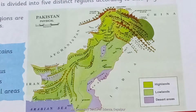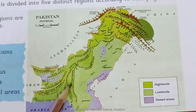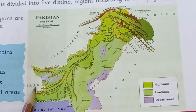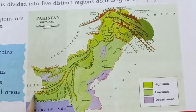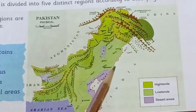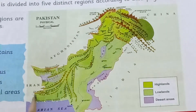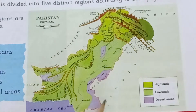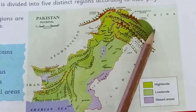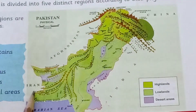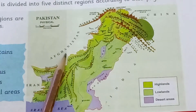Now look at this map. Yahaan aapko kuch countries show ho rahi hain: India, China, Afghanistan, Iran. Ab na sirf ye physical regions Pakistan mein hain, balke ye saare India, China, Afghanistan, aur Iran mein bhi hain — yaani ke physical regions doosare countries mein bhi hain. Ab hum inki direction dekhein: India Pakistan ke east mein hai, China Pakistan ke north-east mein hai, Iran Pakistan ke south-west mein hai, Afghanistan Pakistan ke west-north mein hai.